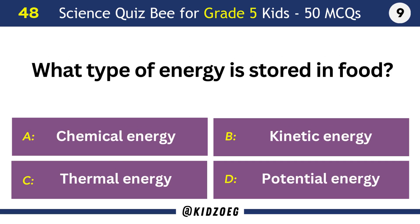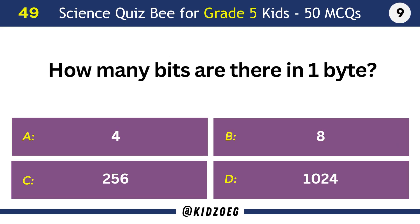What type of energy is stored in food? Chemical energy. How many bits are there in one byte? Eight.